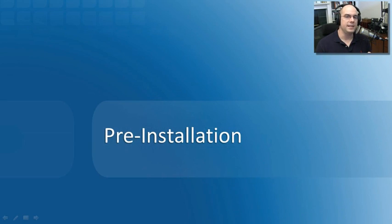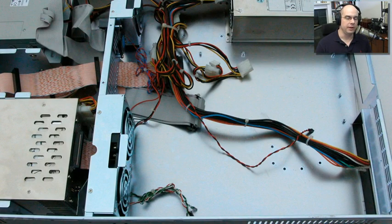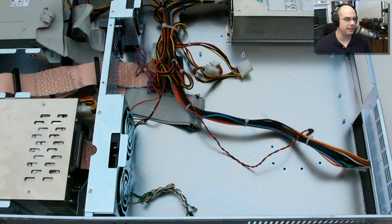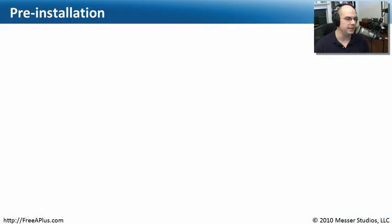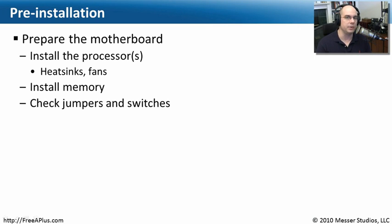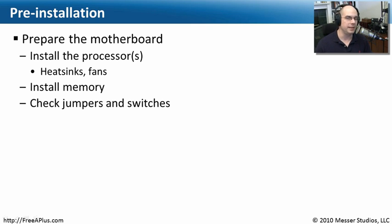So now we've purchased a motherboard and we've got a case. What should we do before actually installing the motherboard? Before we even get to a point where we're screwing it into the case, we need to install the processors, heat sinks, fans, and memory — everything we would need — so we can simply put the motherboard right down and it will be configured exactly the way we'd like. Generally we go through our motherboard documentation and make sure all of these things are in the right place.